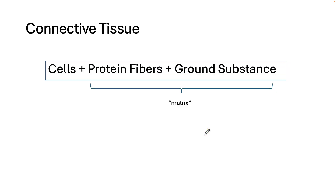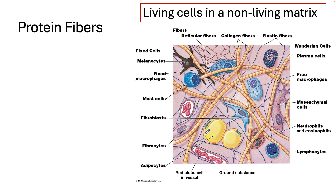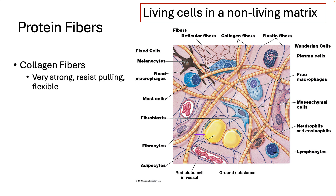The second component of connective tissue is protein fibers, and there are three main types. Collagen fibers are like thick, strong ropes that help bind things together — you can see these really thick, strong fibers running through this tissue. Elastic fibers, as the name suggests, are stretchy and allow certain types of connective tissue to recoil back into shape after being spread out. You can see these are the thinner, more branched fibers going through here.